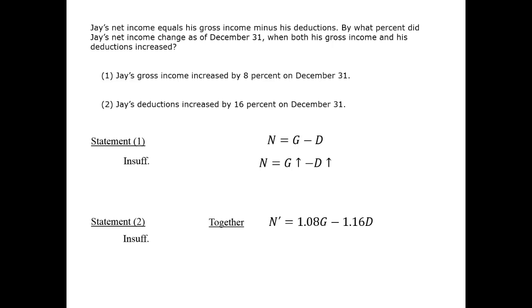We can evaluate by cases. If g and d were both 100, then there would be a gain of $8, a loss of $16, and a net loss of $8.